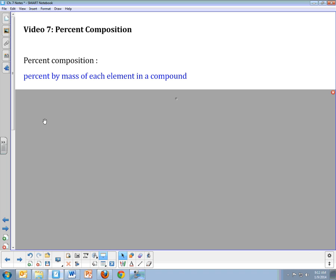This video is on percent composition. Make sure you're taking good notes while you watch this and you're really listening to what's being said in addition to what's being written down. You will need your periodic table along with your calculator for this. Percent composition is by definition the percent by mass of each element in a compound. So by mass we're looking at the percent of each one.